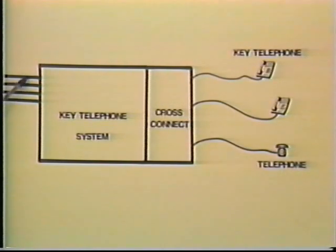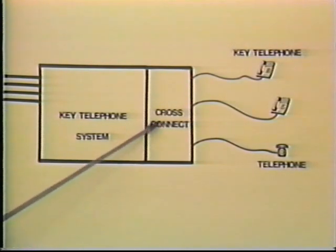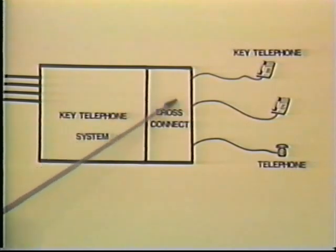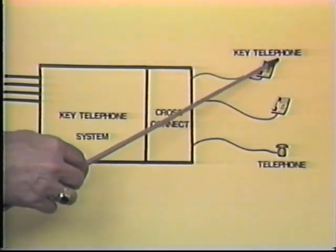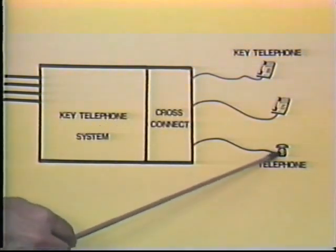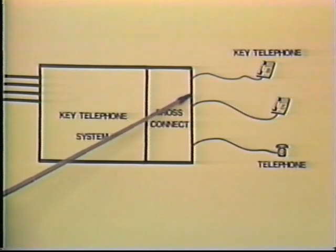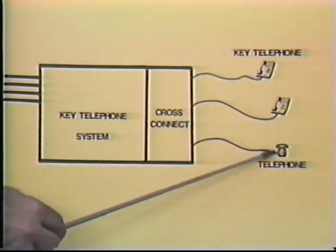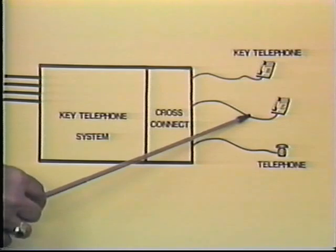With the key telephone system, lines are brought in from the telephone company into the key telephone system itself, usually located in a closet or room off the office area. There's a cross-connect system that allows different lines to be connected to different phones. You can use special phones called key telephone sets with buttons that flash and have hold and various functions, or you can use plain single line sets. The cross-connects are hardware connections that determine which telephone lines appear on which telephone sets.